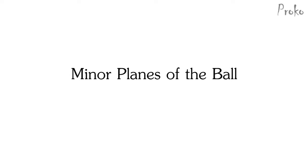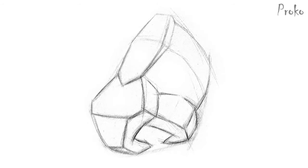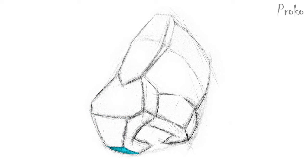The minor planes of the ball. The ball of the nose actually isn't a perfectly smooth ball, but has very distinct plane changes. It has a top, front, and bottom plane as the septum curls under itself and connects to the skull. The side plane acts as a step down to the nostril. It's also important to indicate the thickness of the septum.